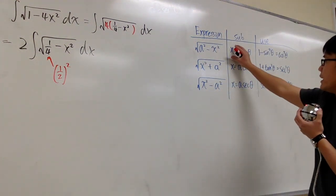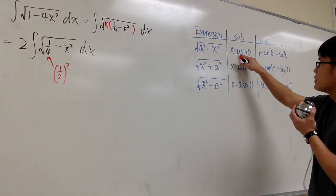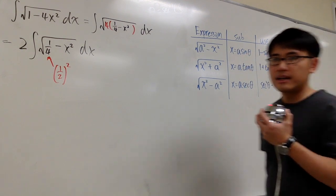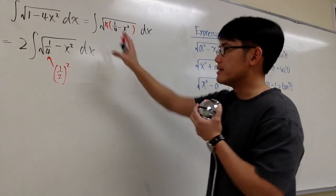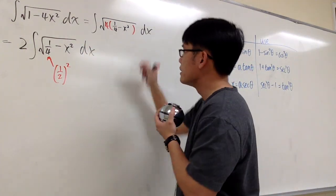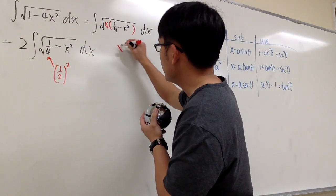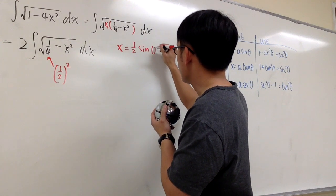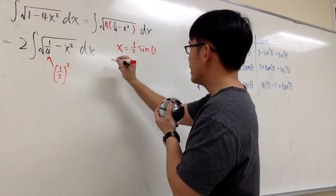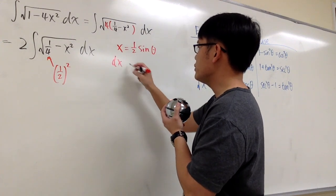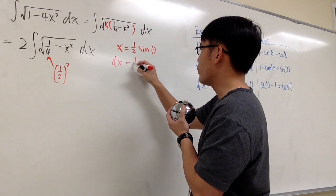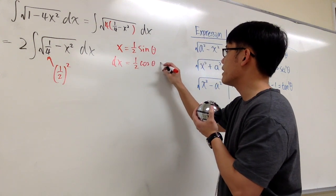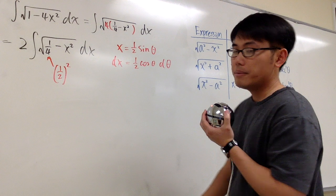We will begin by saying that x equals 1/2 times sine theta, and we'll take this integral into the theta world. So x equals (1/2)sinθ. Differentiating both sides, we get dx = (1/2) cosθ dθ.